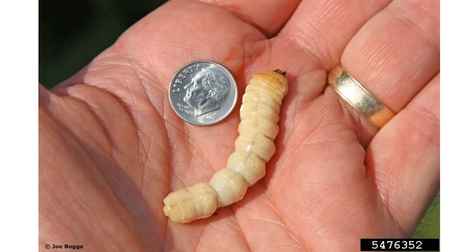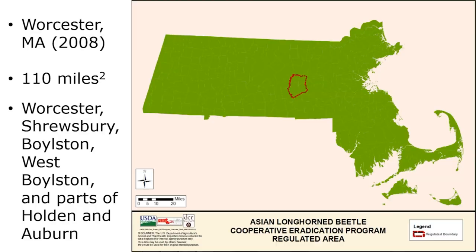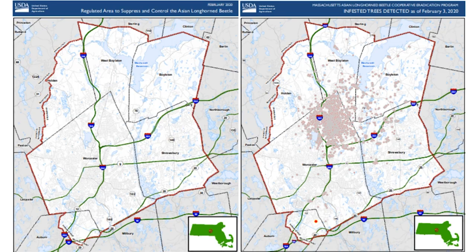If you find what looks like an impossibly infested maple tree, again, if you're in Massachusetts, call 508-852-8090. Asian Longhorned Beetle was detected in Worcester, Massachusetts in 2008 — again, reported by a homeowner. We encourage homeowners to be vigilant and report any suspicious insects. The regulated area for Asian Longhorned Beetle is currently 110 square miles, including Worcester, Shrewsbury, Boylston, West Boylston, and parts of Holden and Auburn, Massachusetts, located right around Central Mass. These maps are courtesy of USDA APHIS and show the regulated area for ALB in Central Massachusetts.